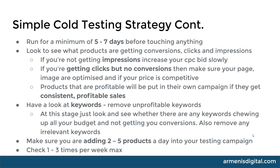To fully optimize the campaign it probably needs 14 days. From there, look at which products are getting conversions, which are getting clicks, and which are getting impressions. If you're not getting impressions, increase your CPC bids very slowly — a couple of cents at a time. If you're getting clicks but no conversions, make sure your page images and titles are optimized and check that your price is competitive. Products that are profitable will be moved into their own campaign when you're ready to scale.